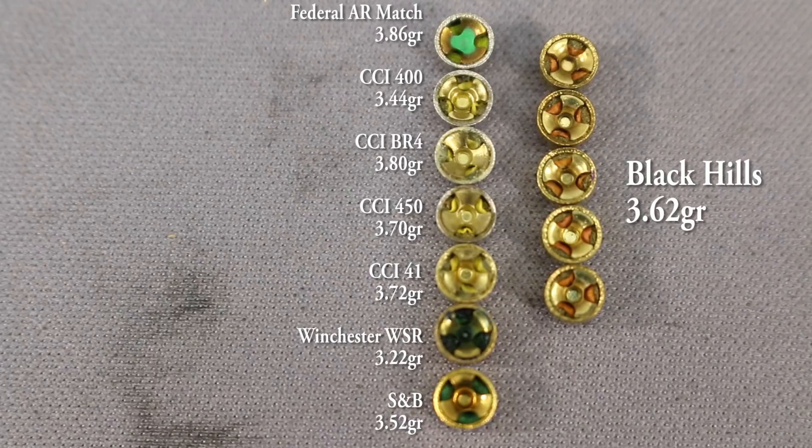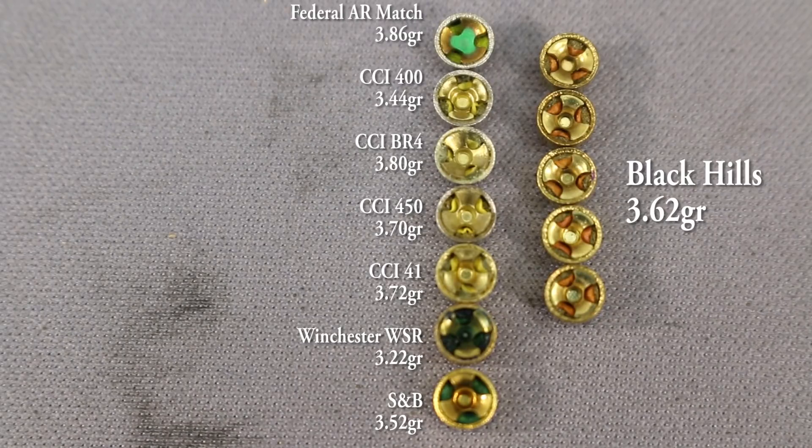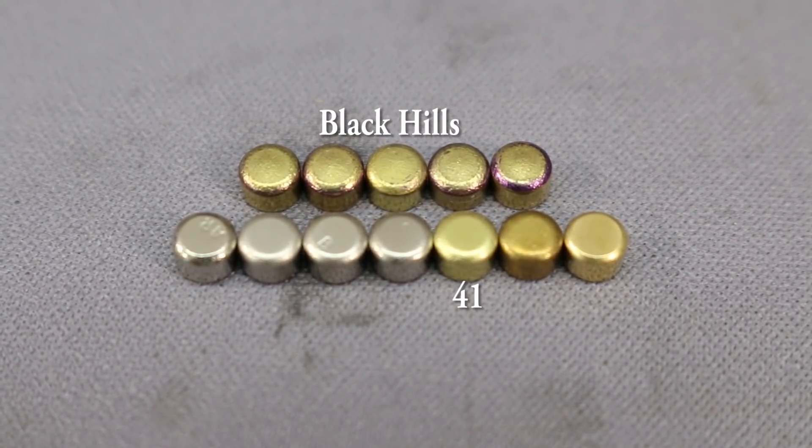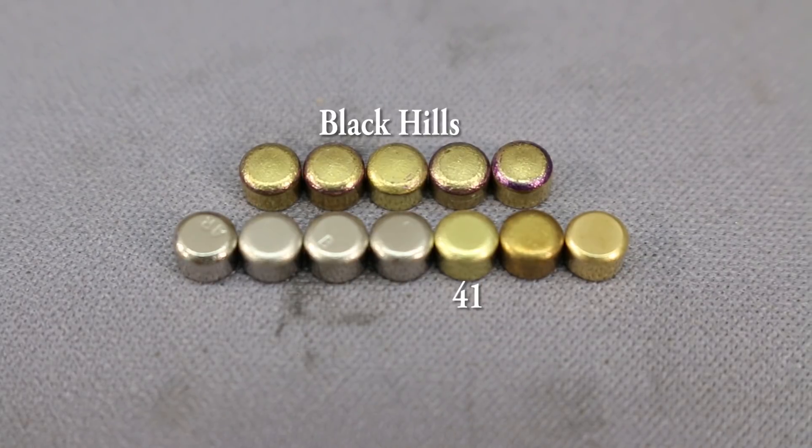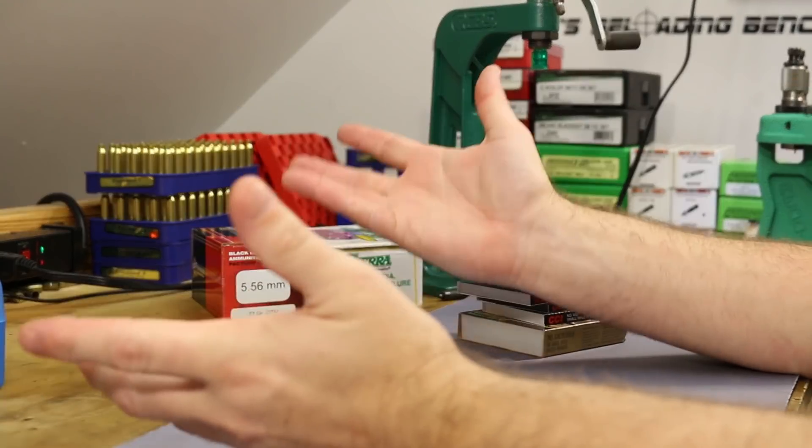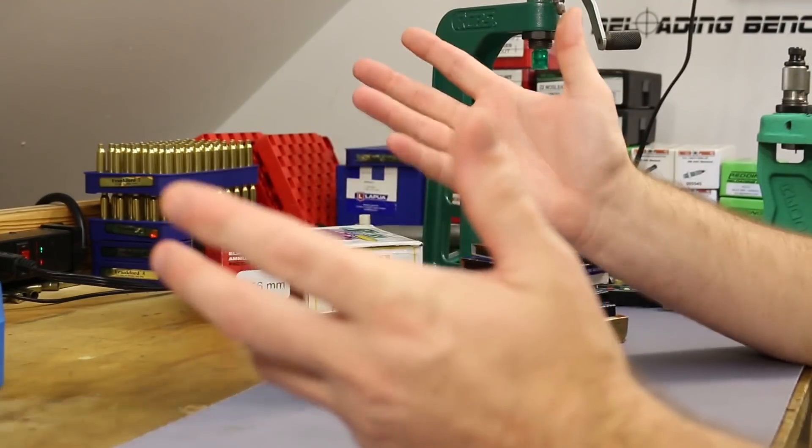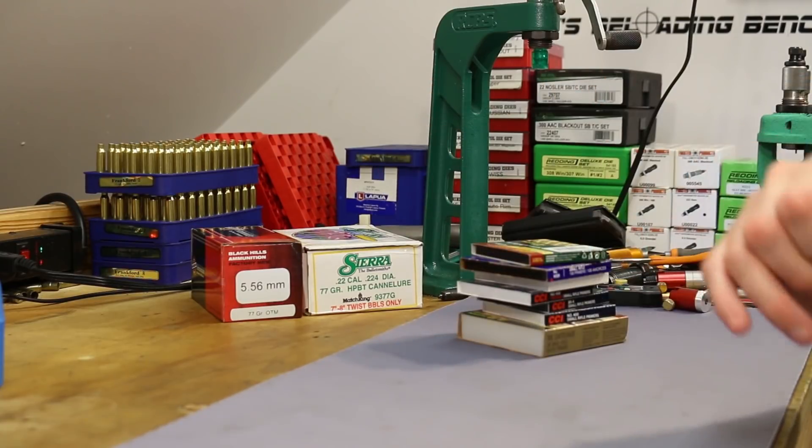As you see, I actually weighed these stupid things, and they ranged from the lightest, the Winchester WSR at 3.22 grains, all the way up to the CCI BR-4 at 3.8 grains. I was surprised with the consistency on the weight of these. I measured five of each and took an average. They were all within a couple hundredths of a grain from their other light partners. Very consistent weight, and none of them match what we pulled out of our Mark 262 ammo. We don't have anything that weighs the same and we don't have anything that looks the same. What I think I'm going to do is start out with the CCI 41. The CCI number 41 seems to be the closest match. If you look at the anvil shape and the cup, the color of the cup and all that stuff, it seems to be pretty close.